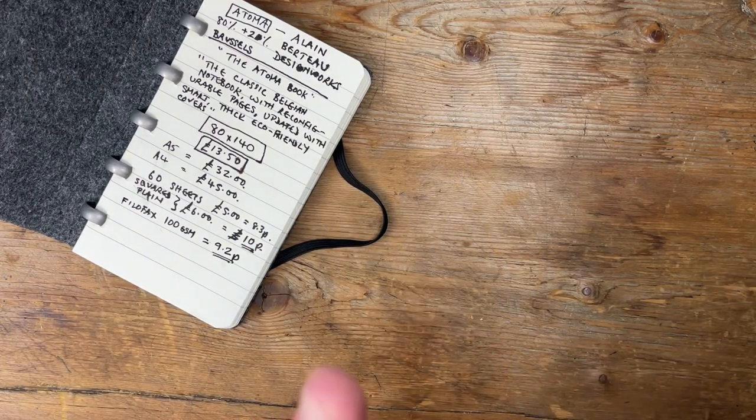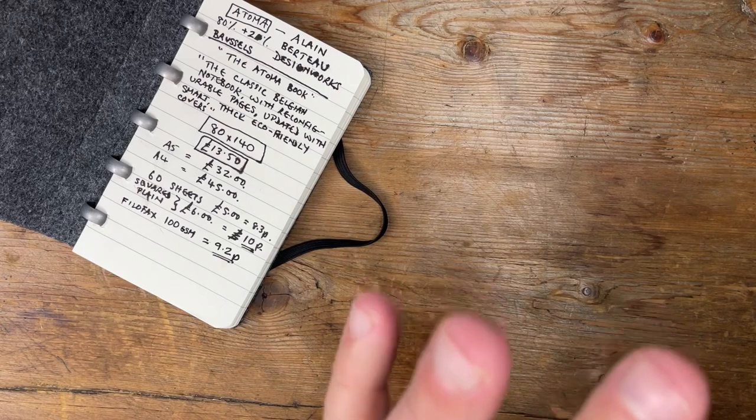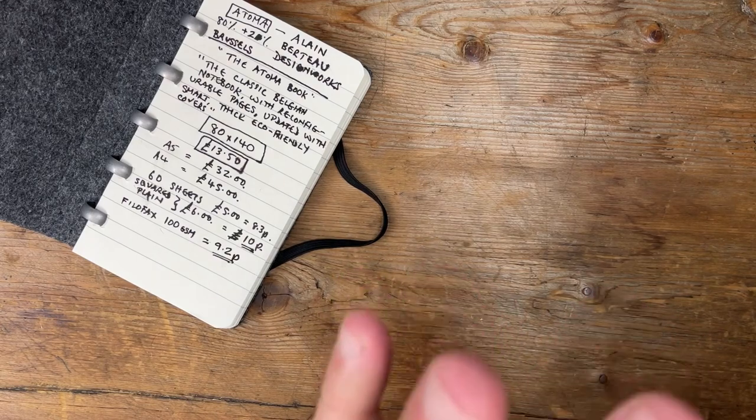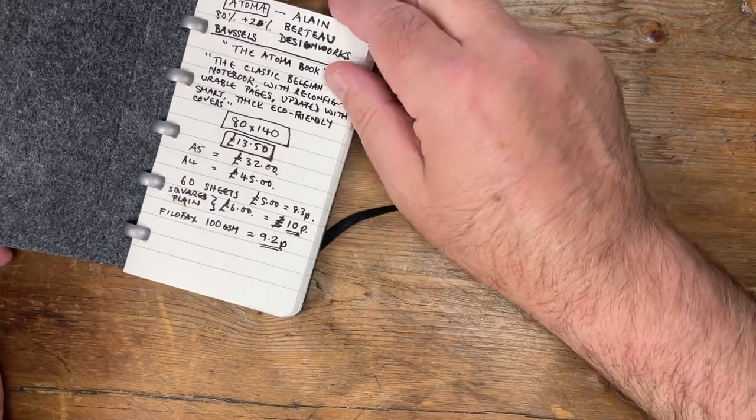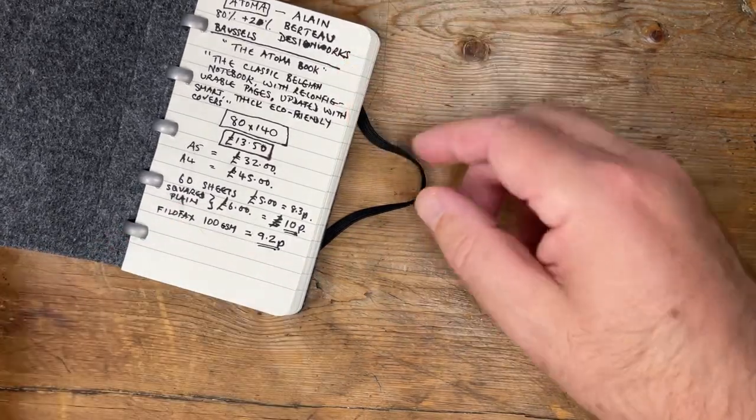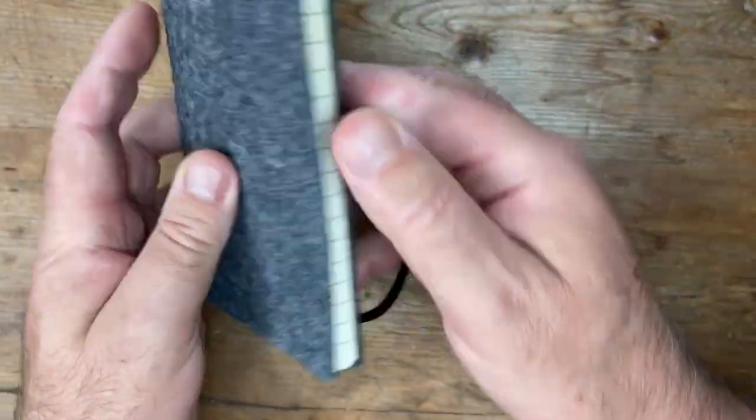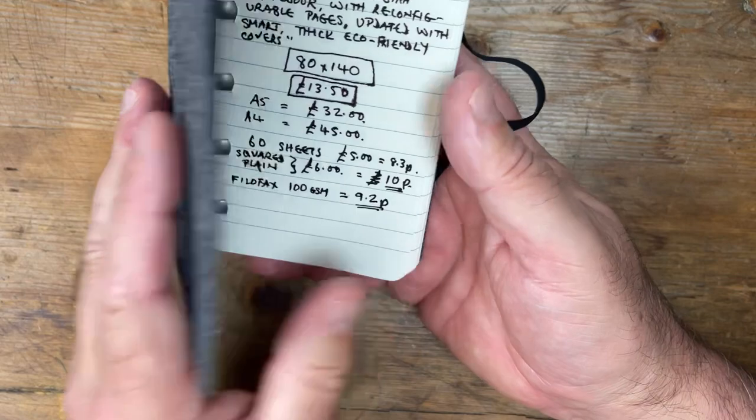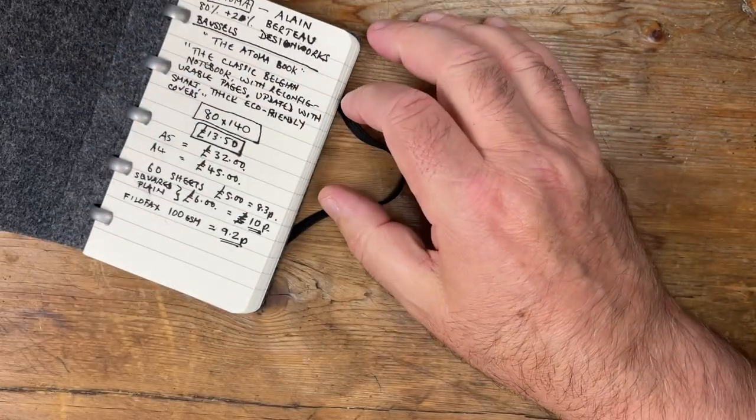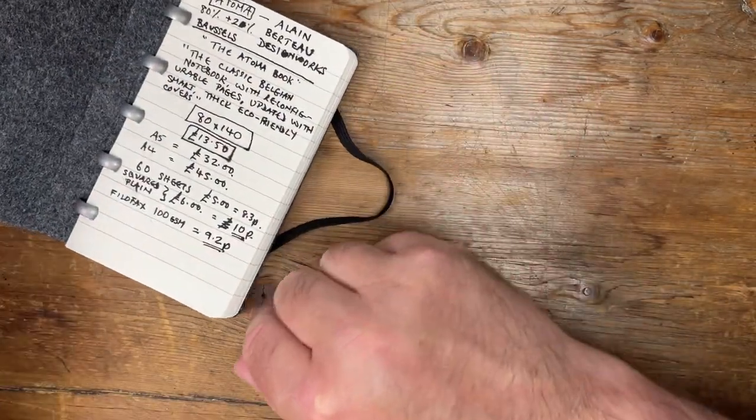And they've actually got some nice paper, so the Filofax paper is 100 GSM. So I've not tried it, but 100 GSM could be good for fountain pen. This is 90 GSM, and that is 295 for 32 sheets, which works at 9.2p per sheet. But this is, I mean, I'll talk about money when I go through the cons, because obviously I'm talking about this in glowing terms.